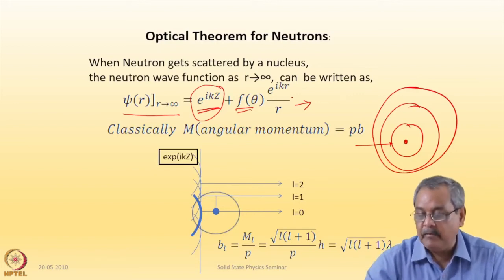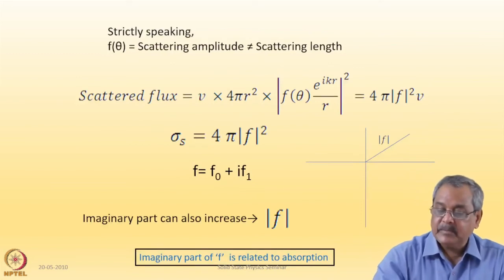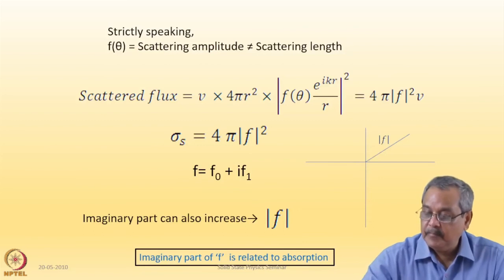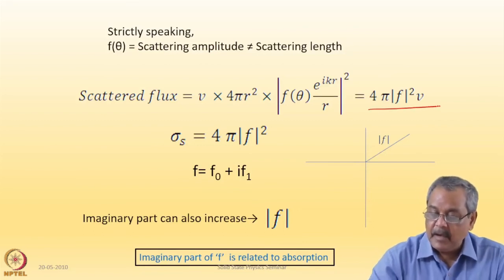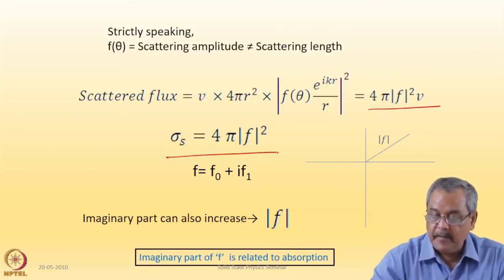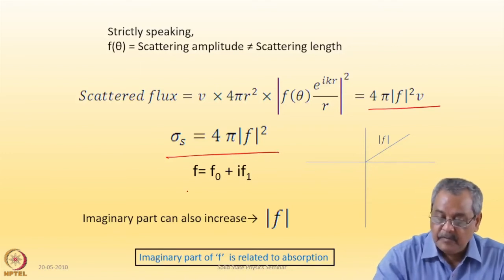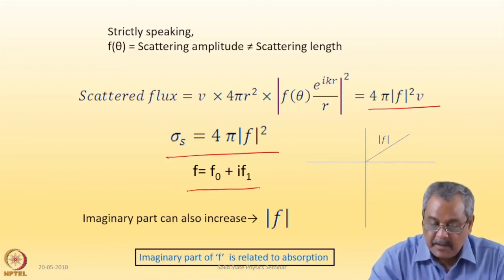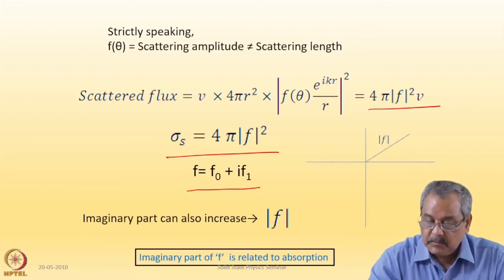If the sample is hit by a neutron, then the scattered wave goes out spherically. And this is given by a spherical wave, it is equal to e to the power IKR by R. So scattered flux, if you consider F as the scattering amplitude, is given by this. And the scattering cross-section is 4 pi modulus of F square, where F is given by a real partial part and then imaginary part.